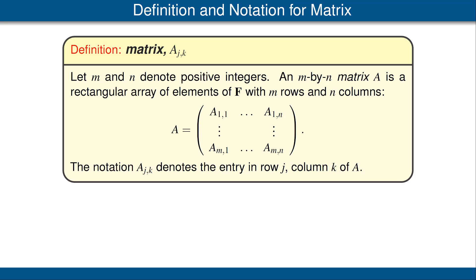Suppose m and n are positive integers. An m by n matrix A is a rectangular array of elements of our scalar field F with m rows and n columns, so it looks like what you see here. Usually a matrix is surrounded either with parentheses or square brackets. I tend to use parentheses.